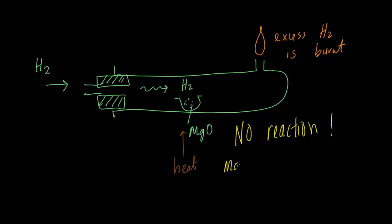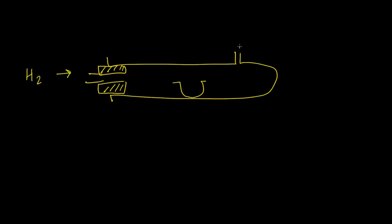We start all over again and instead of using magnesium oxide we use another metal. Remember the apparatus is the same - we flow hydrogen gas here, we burn the excess hydrogen here.